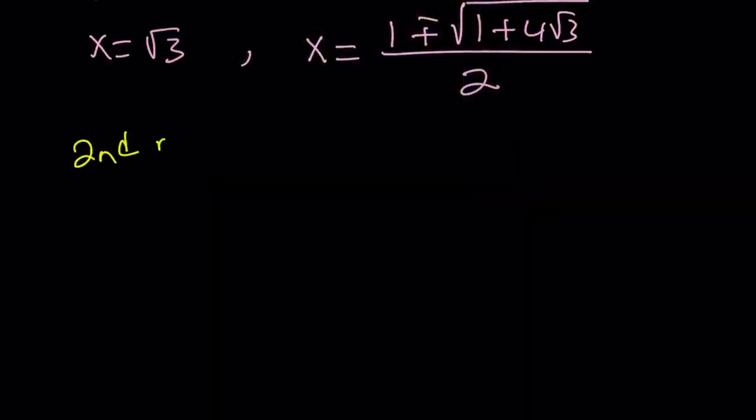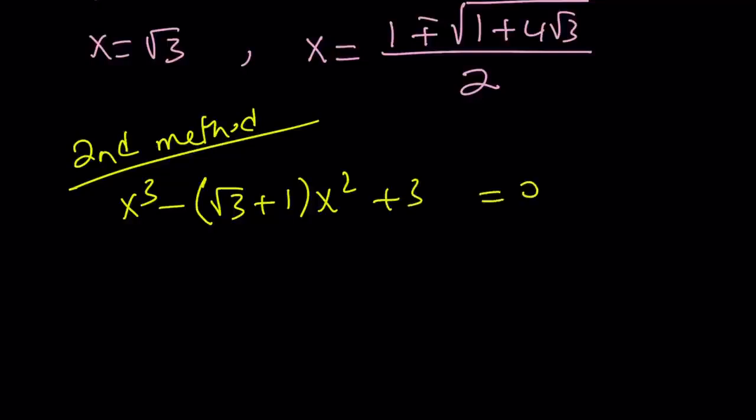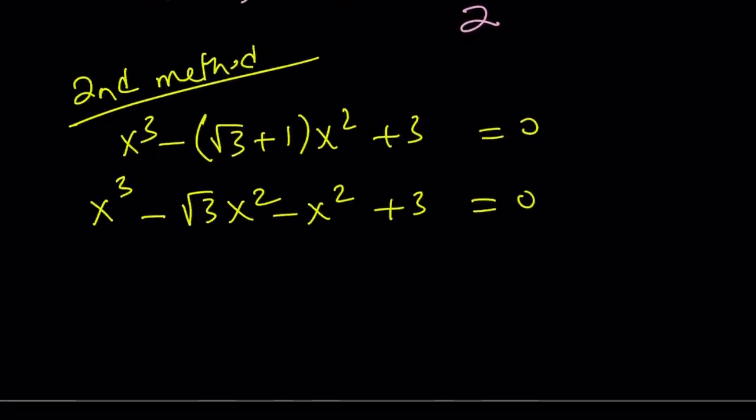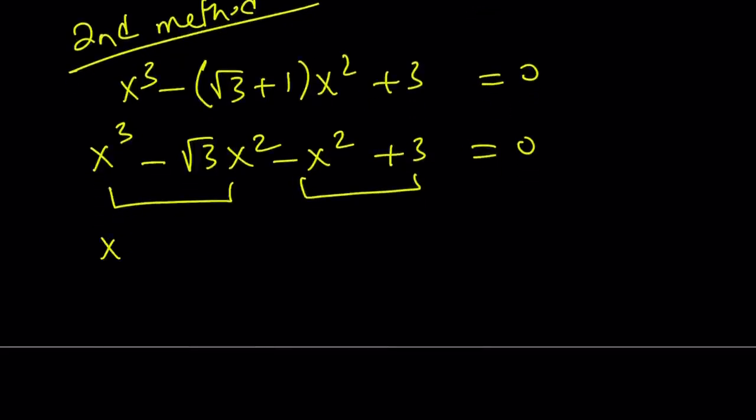So the second method definitely will be easier. I have my equation x cubed minus the quantity square root of 3 plus 1 times x squared plus 3 is equal to 0. Now, I'm going to expand everything. x cubed minus square root of 3x squared minus x squared plus 3 is equal to 0. Now, notice that this equation has 4 terms and it's factorable. We can factor this by grouping. Let's go ahead and take out x squared and now here I can take out a negative 1 for now and just write it as x squared minus 3 equals 0.